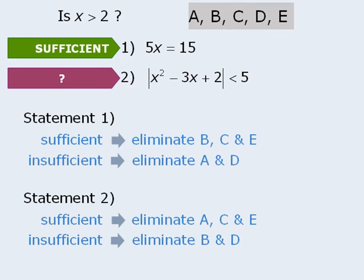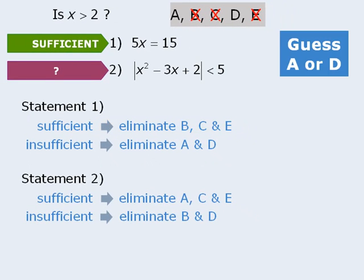Using the elimination method, we can see that when statement 1 is sufficient, we can eliminate answer choices B, C, and E. When we do this, we see that only two answer choices remain, so we will guess either A or D. So by knowing that statement 1 is sufficient, we were able to reduce our possible answer choices down to just 2. Now the correct answer here is A, and I will leave it to you to confirm this.